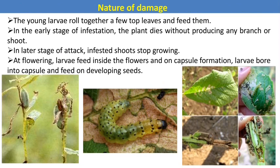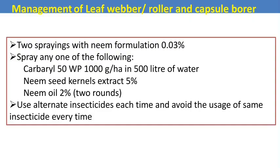In the early stage of infestation, the plant dies without producing any branches or shoots. In later stage attack, infested shoots stop growing. At the flowering stage, the larvae feed inside the flowers at capsule formation. Larvae bore into the capsules and feed on the developing seeds. This caterpillar attacks all plant parts of sesame — initially on leaves, then after flower formation on flowers causing flower drop, and also feeds on capsules, directly reducing yield. In this picture you can see that at an initial condition, the first few top leaves are rolled by the caterpillar and it feeds in a concealed condition, then it attacks capsules and floral buds.